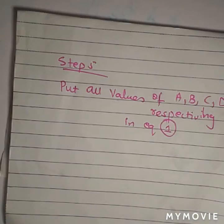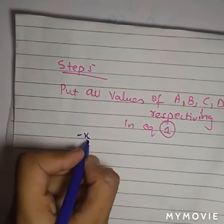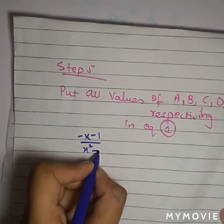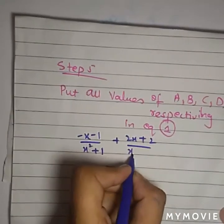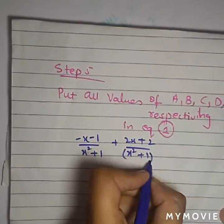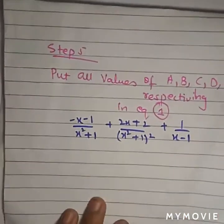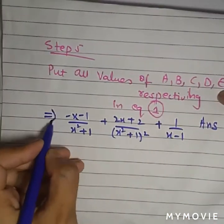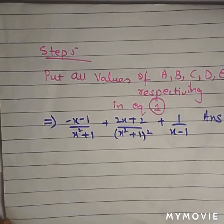Step 5: Put all the values of A, B, C, D, E respectively in equation 1. Remember what is equation 1? When we put all the values in equation 1, we get: minus x minus 1 over (x squared plus 1) plus 2x plus 2 over (x squared plus 1) squared plus 1 over x minus 1. You can write as is. This is our answer, and you can write the left-hand side as the question which was given by you. This gains more marks from your examiner.